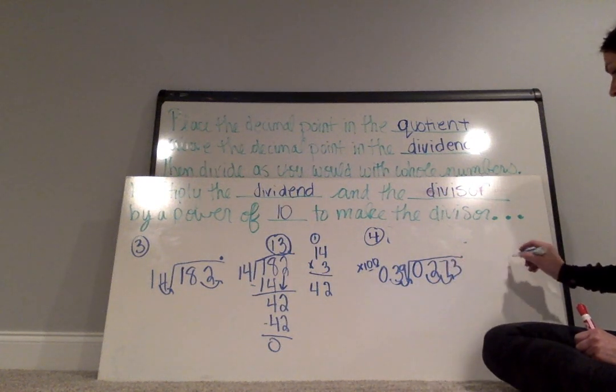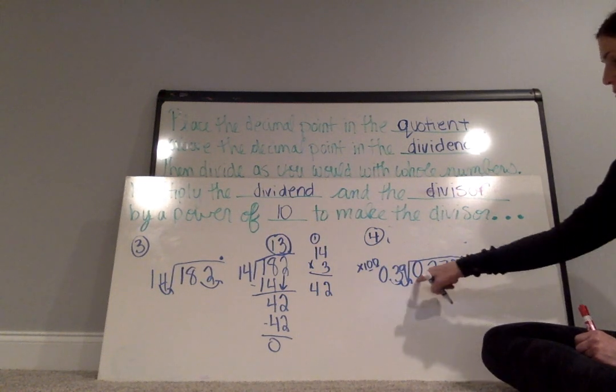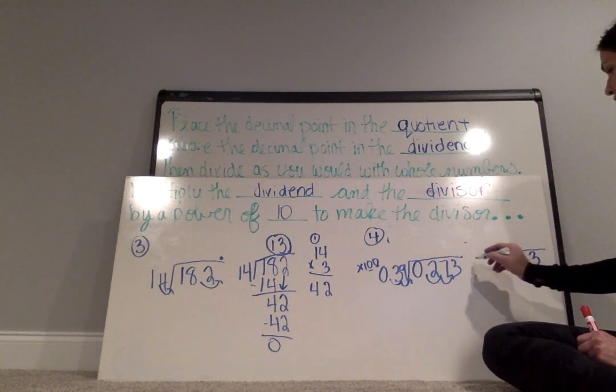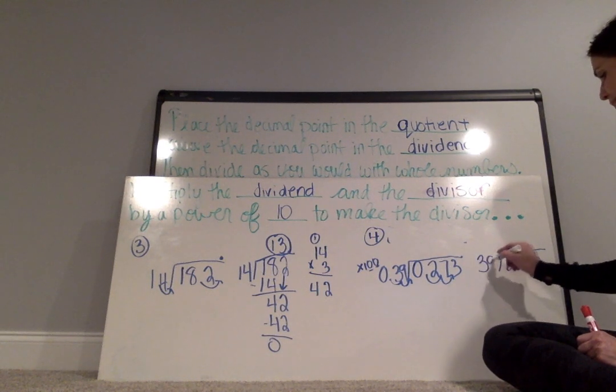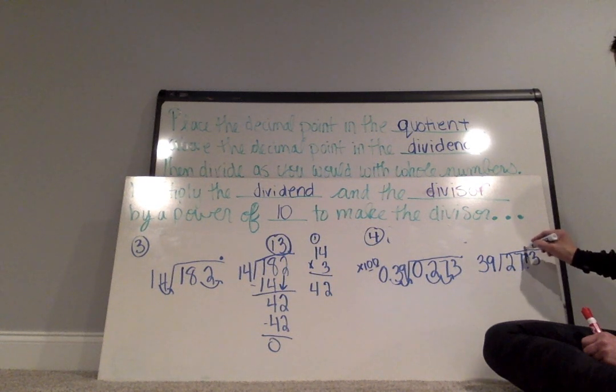So I'm going to rewrite my problem. And I really can just write the dividend as 27.3 and remove the zero before the two, divided by 39. And I'm going to move the decimal point up into the quotient.